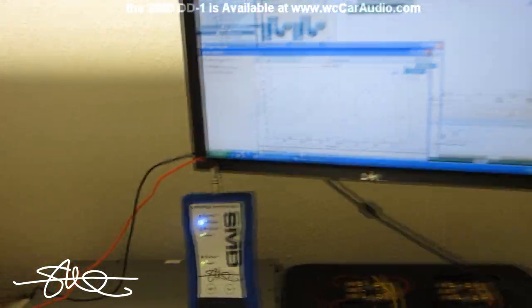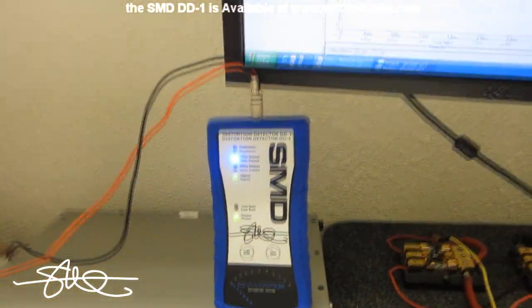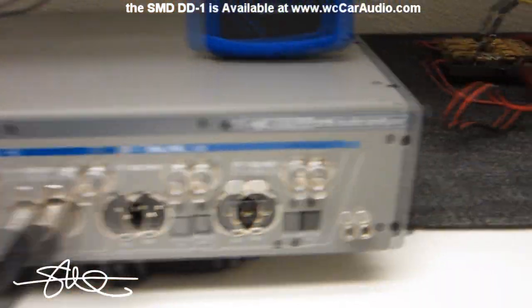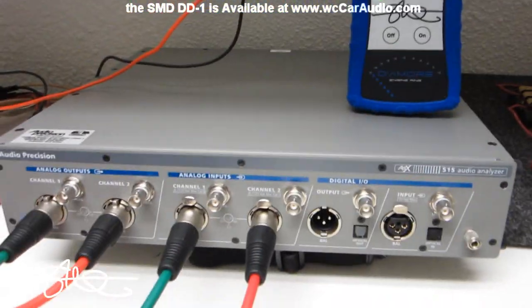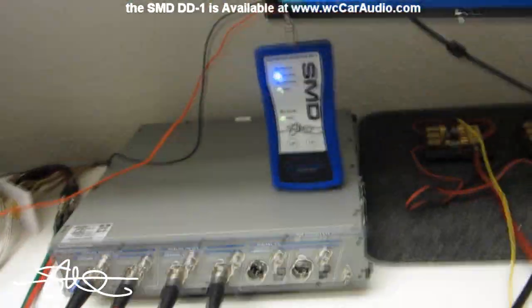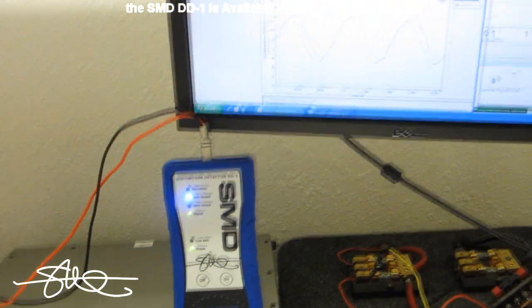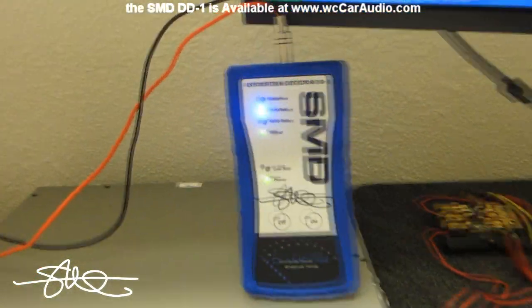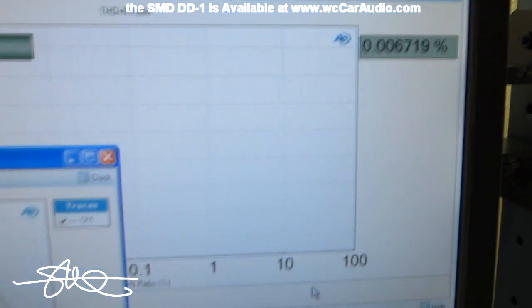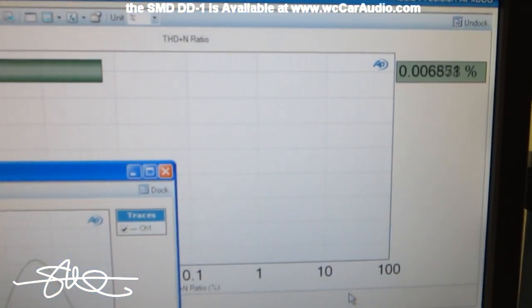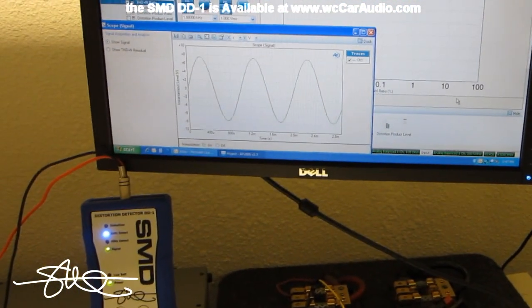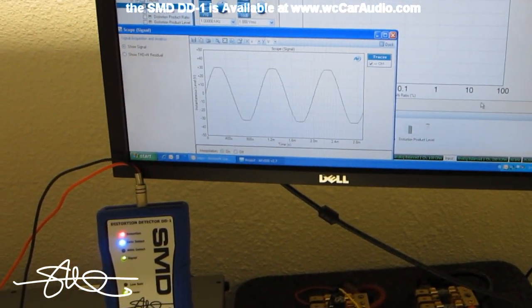Just a quick video here. We're going to compare the SMD DD1 versus the latest and greatest from Audio Precision, the APX515. This is a $7,000 piece of equipment. So, we have an amplifier hooked up and we're going to see the distortion light versus the signal on the scope here and the actual measured distortion on the Audio Precision. So, go ahead and turn it up one until you get the clipping just happening there.